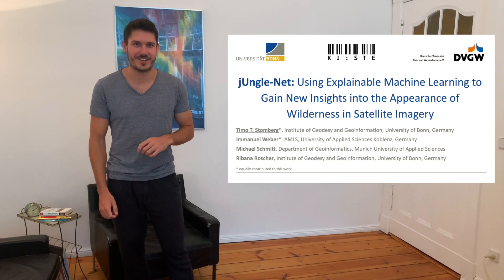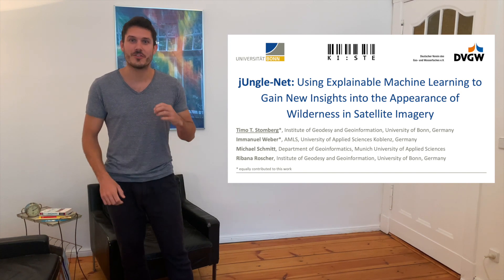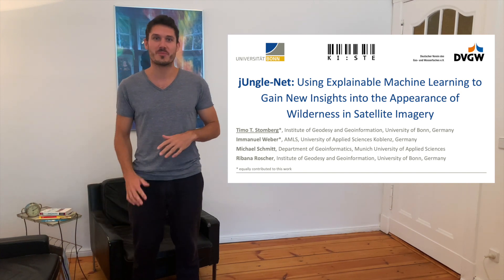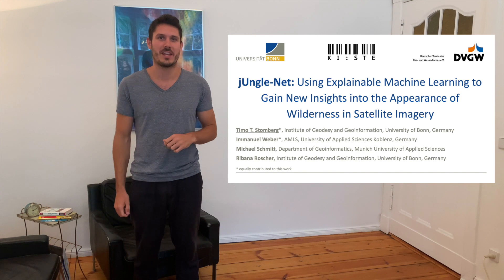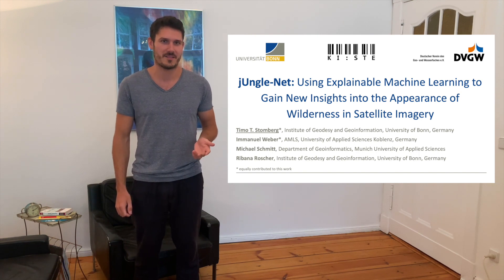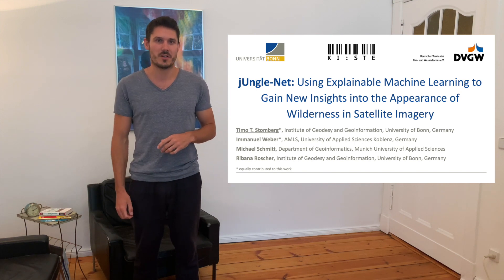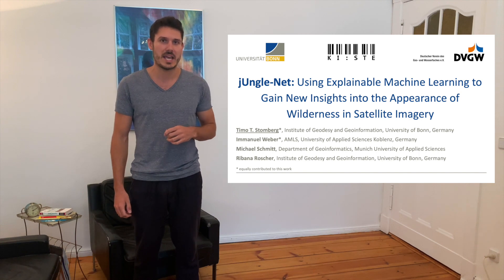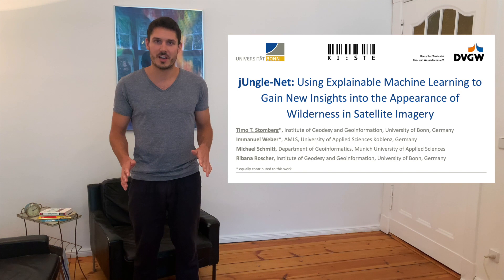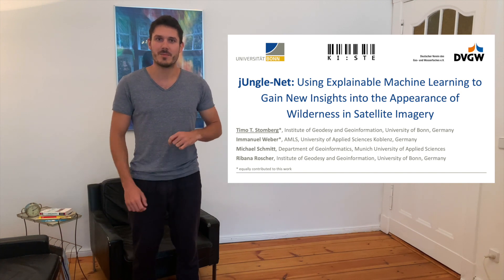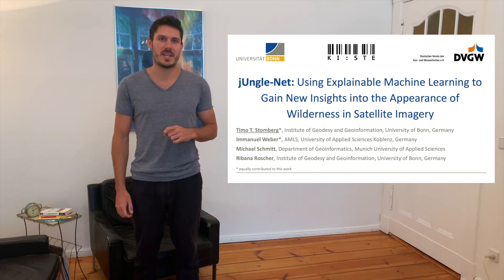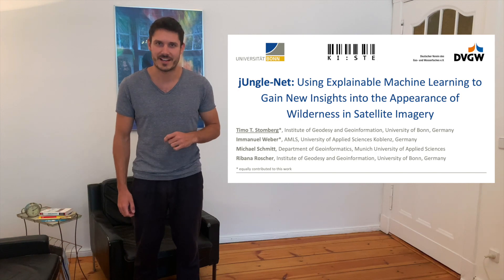Dear audience, thank you very much for your interest in JungleNet, a convolutional neural network which not only classifies but also provides interpretable information about its decisions on wilderness. I am Timo Stonberg and today I present the work of Immanuel Weber and me. We also got great support from Professor Michael Schmidt and Professor Ribana-Roscher. So let's begin with this talk: JungleNet, using explainable machine learning to gain new insights into the appearance of wilderness in satellite imagery.